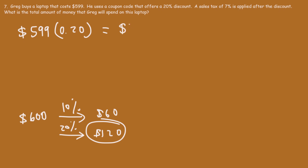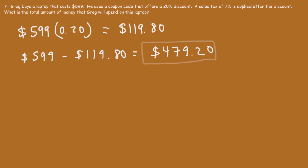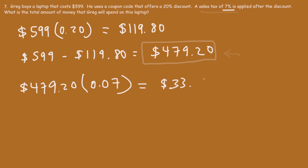When he receives the 20% discount, the price is reduced by $119.80. Subtracting: $599 minus $119.80 equals $479.20 — this is the price after the 20% discount. Now a sales tax of 7% is applied to this amount. Converting 7% to a decimal gives 0.07. $479.20 times 0.07 equals $33.54.